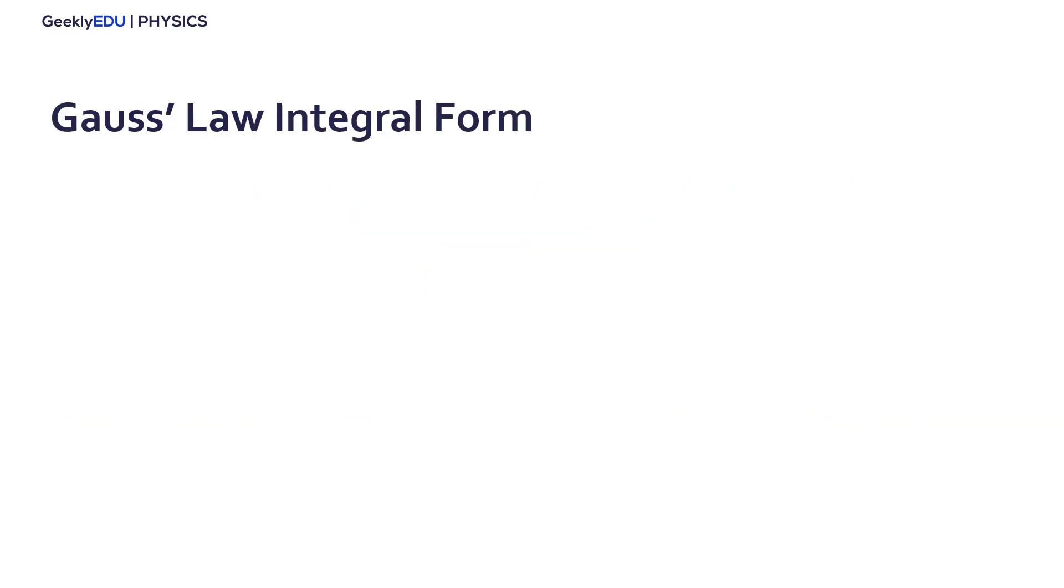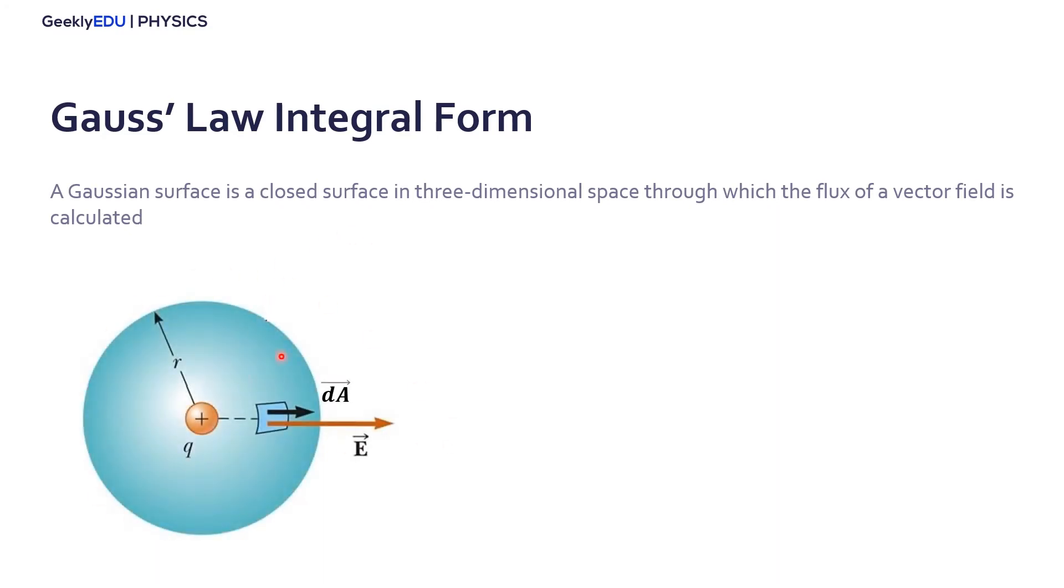So to better understand the Gauss Law, let's take a look into the integral form of the Gauss theorem. We can start by considering a Gaussian surface. A Gaussian surface is any closed surface in the three-dimensional space through which the flux of a vector field is calculated. It can be any closed surface, but let's take a sphere as an example because we'll make things simpler.